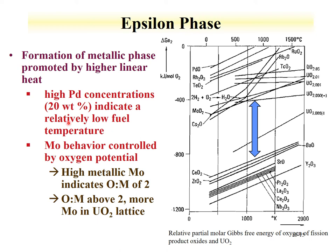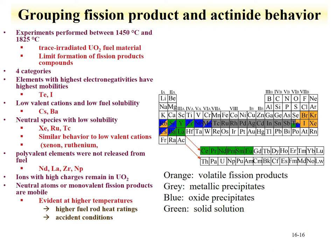Molybdenum behavior is particularly strongly controlled by oxygen potential - its line is much steeper than the other elements. Molybdenum tends to remain as metal if the metal-to-oxygen ratio is 2; if there is more oxygen (ratio above 2), more molybdenum deposits in the UO₂ lattice. Experiments done between 1,400 and 1,800°C with trace irradiation of UO₂ material were used to evaluate fission product behavior.